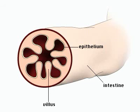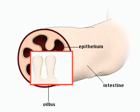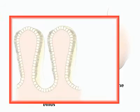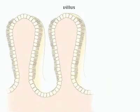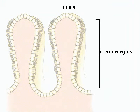Nutrients are absorbed in the intestinal tract by a lining of epithelial cells. Villi are folds in the lining which increase surface area. Enterocytes on the surface of the villus carry out the absorptive function.